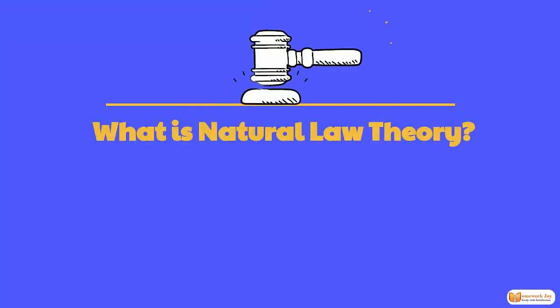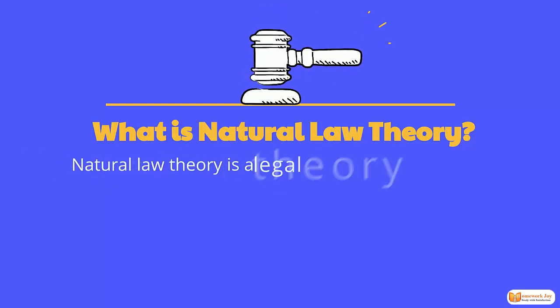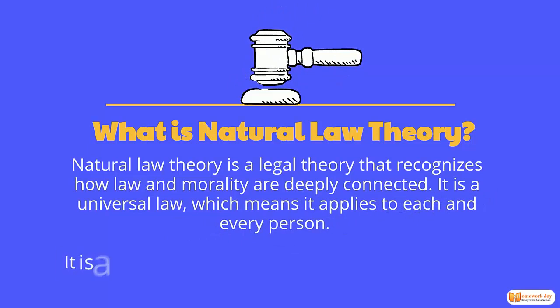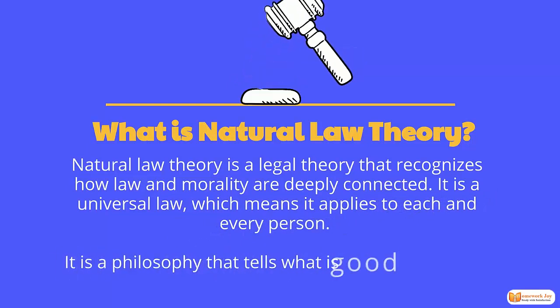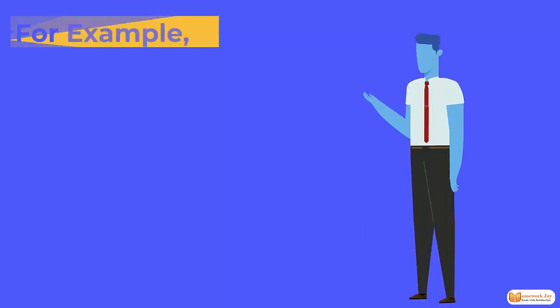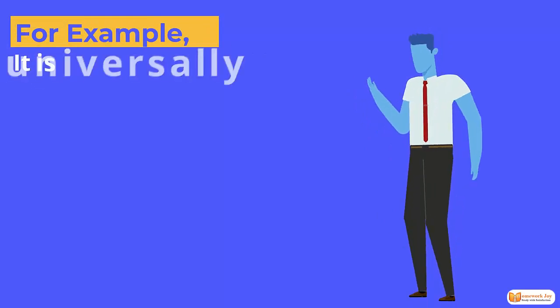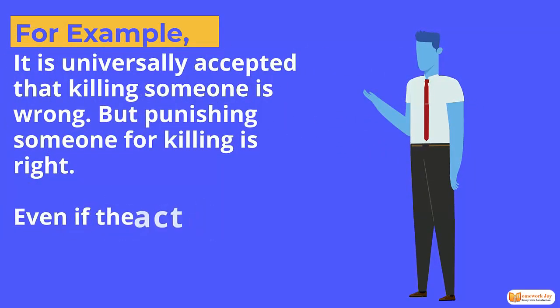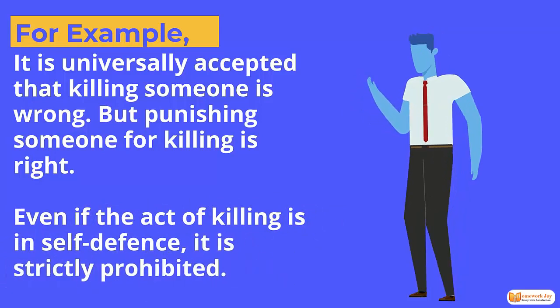What is natural law theory? Natural law theory is a theory that recognizes how law and morality are connected. It is universal law, which means it applies to each and every person. It is a philosophy that tells what is good or bad, right or wrong. For example, it is universally accepted that killing someone is wrong, but punishing someone for killing is right.